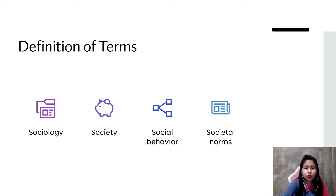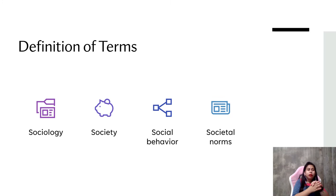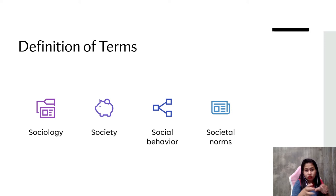Our next term is societal norms — the behaviors that are considered acceptable in a group or society. These are the actions that are accepted within the society you belong to. For example, if you are Catholic, a societal norm would be knowing how to do the sign of the cross. If you are from a Pentecostal group, it is an acceptable behavior to pray in the name of Jesus at the end of your prayer. That is one of the societal norms in that group.